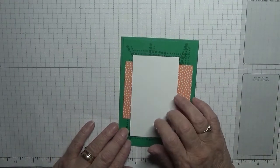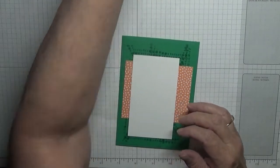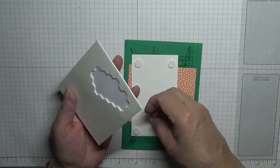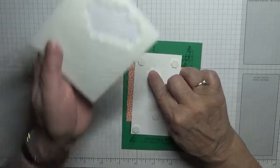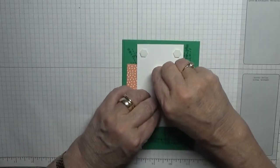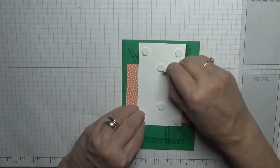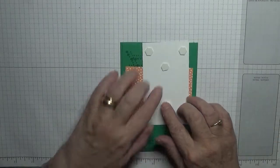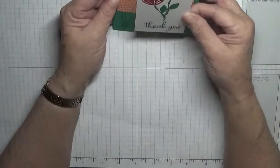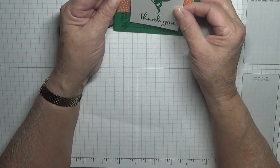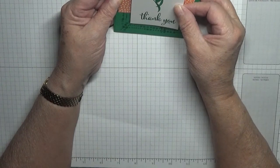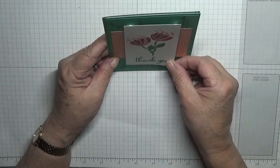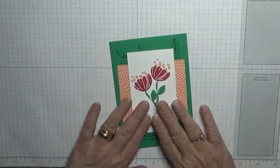Then we're going to stick this on the card base, and this is going on dimensionals. Take the backings off and just place that over the paper, straight and even.